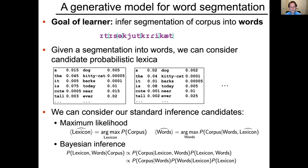Or we might use Bayesian inference. In that case, we would put a prior distribution on the lexicon and words, and use that reconciled with the likelihood of the corpus given the lexicon and words to form a posterior on lexicon and words given the corpus. Given the generative model we've described, if you have the lexicon, you get the distribution over word sequences. So it's natural to factorize the joint prior over lexicon and words into the prior on lexicon times the conditional probability of word sequences given the lexicon.